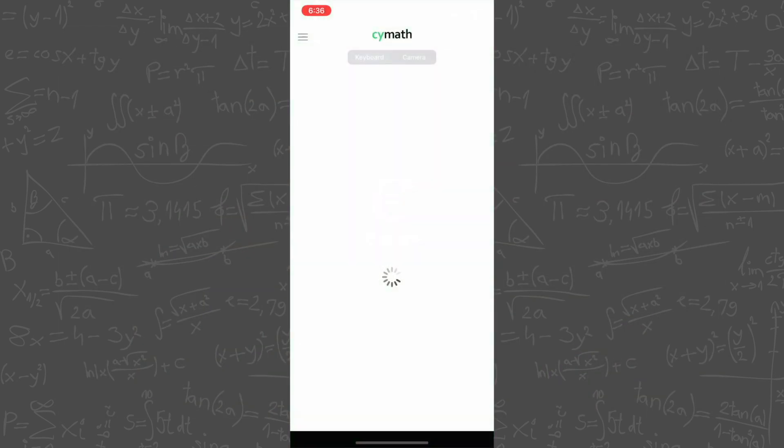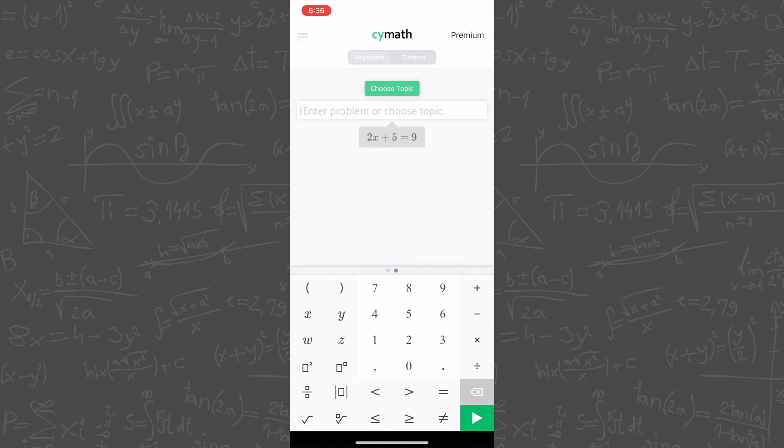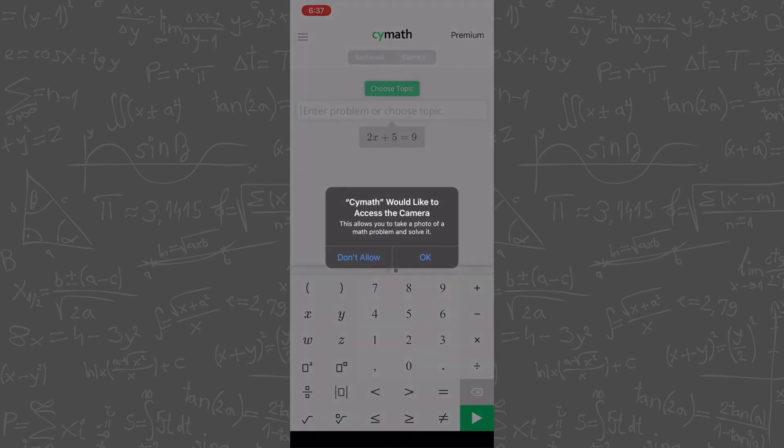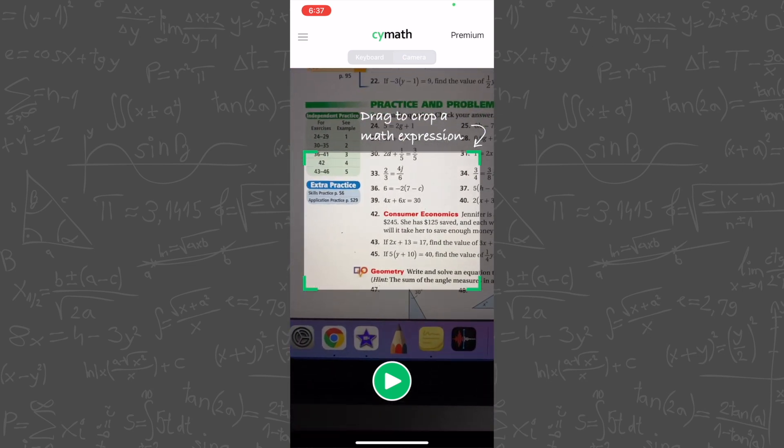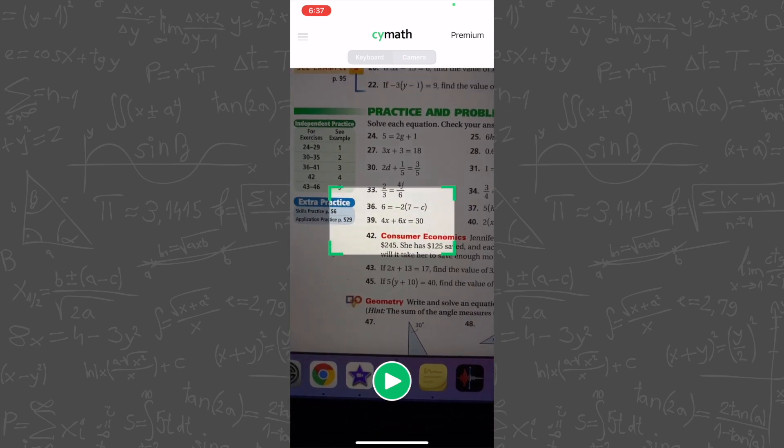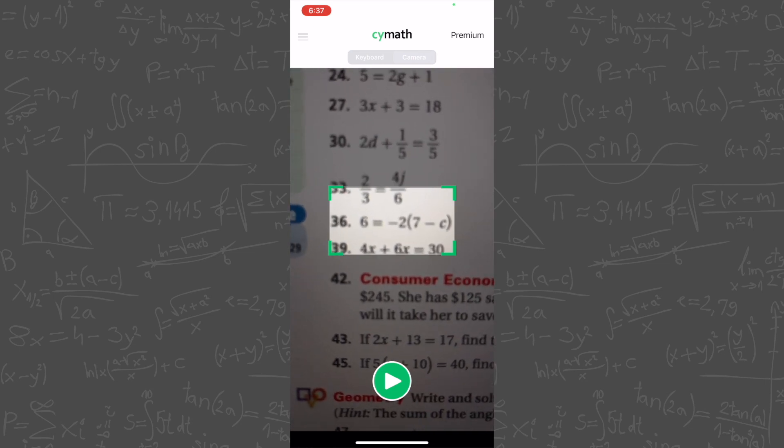When you first open up Scimath, it brings you right to the solver. You can either type in your problem or take a picture. I personally hate typing in questions, I think it takes too long, so I'm going to use the camera option. I have a bunch of problems lined up from Algebra 1 all the way up to Calculus, so no matter what class you're taking, let's see what type of problems it can solve.